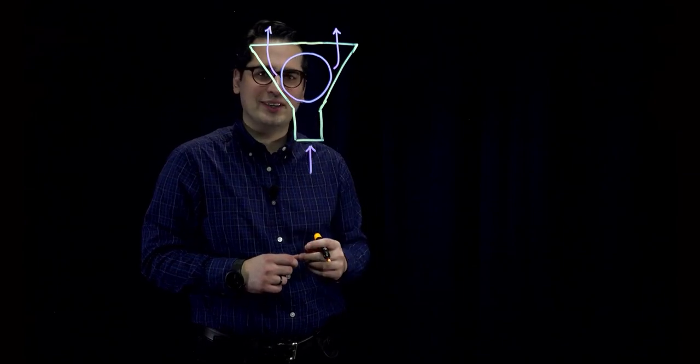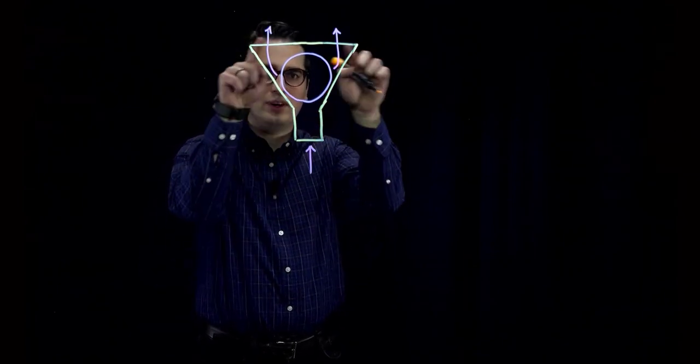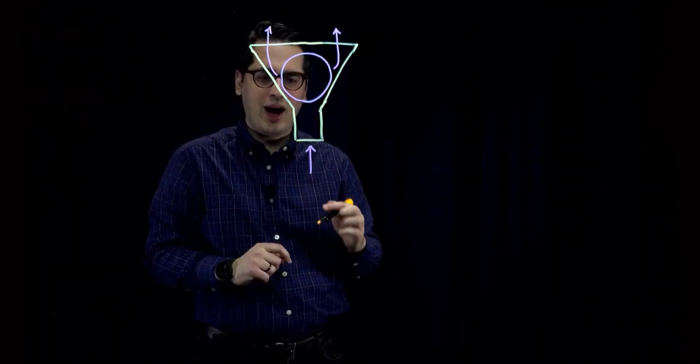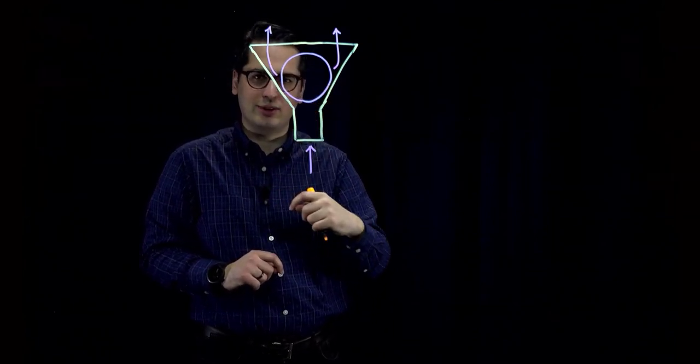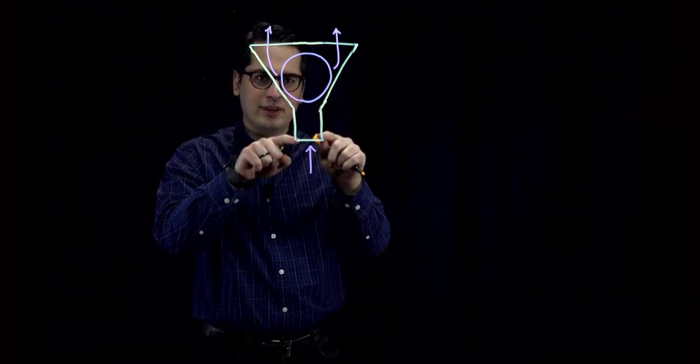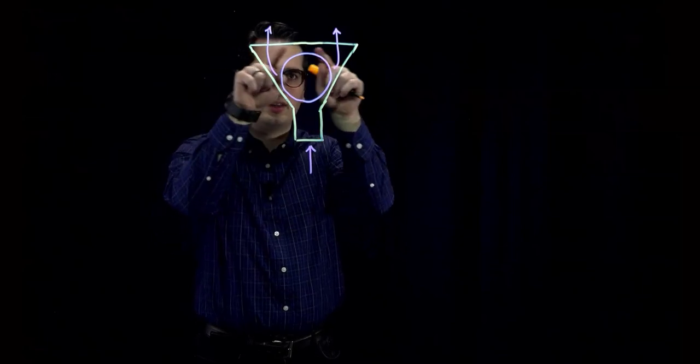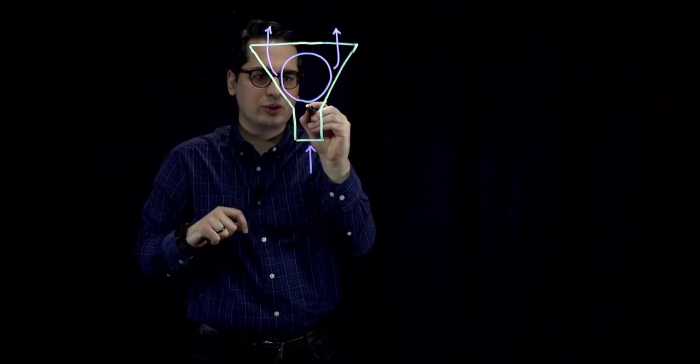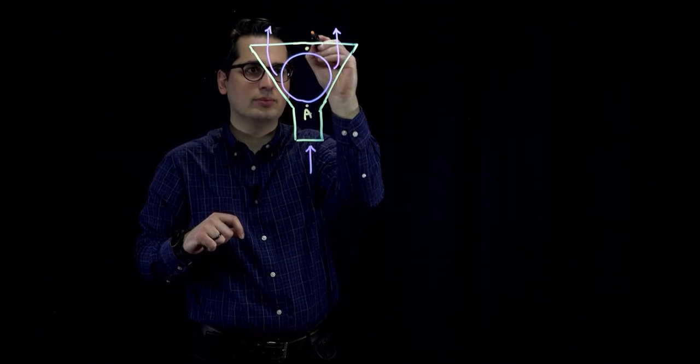This is a schematic figure that shows our experiment. This is the funnel, and this is the ping pong ball. I blew inside the funnel in this direction. Because the diameter of this tube is smaller than over here, let's call this point point A, and this point point B.